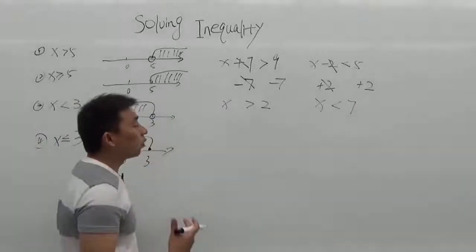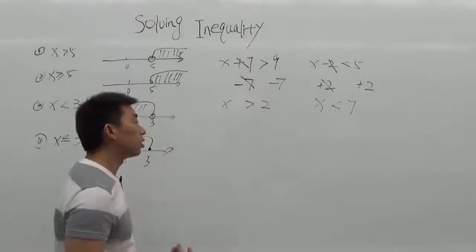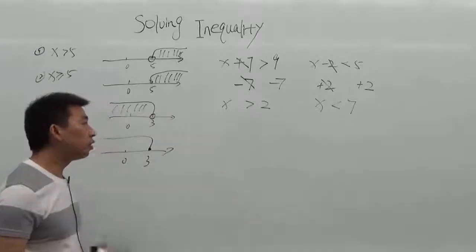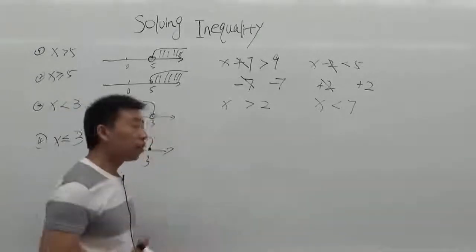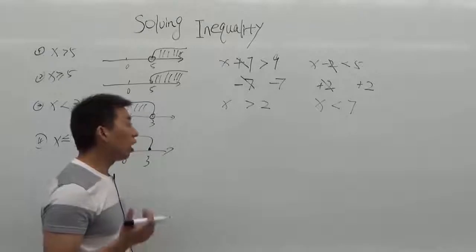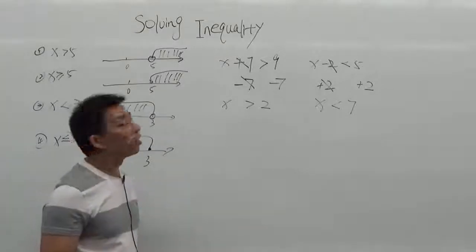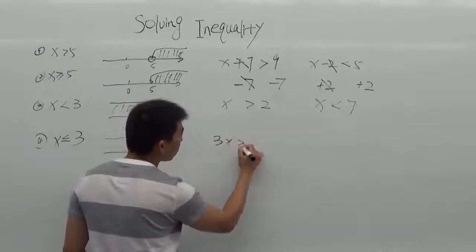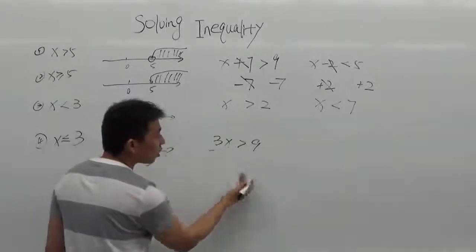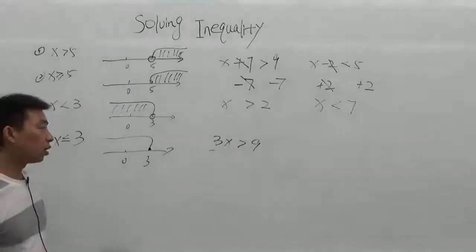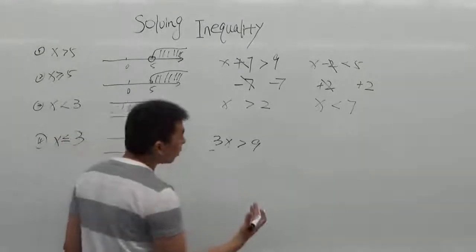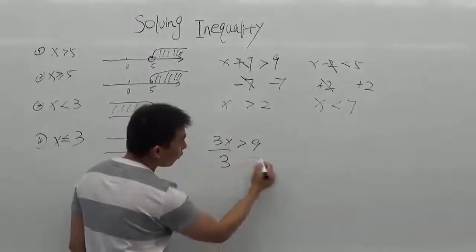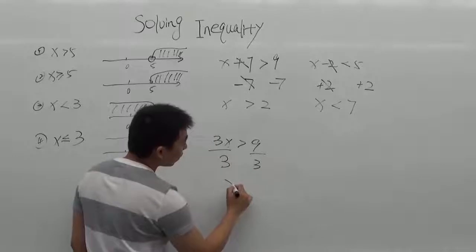But you need to be careful when you do division and multiplication, because if there is a negative number in front of x — the coefficient — you need to change your sign. For example, 3x greater than 9: here the coefficient is positive, so it's the same as the equation. Just divide by 3 for both sides, and you have x greater than 3.